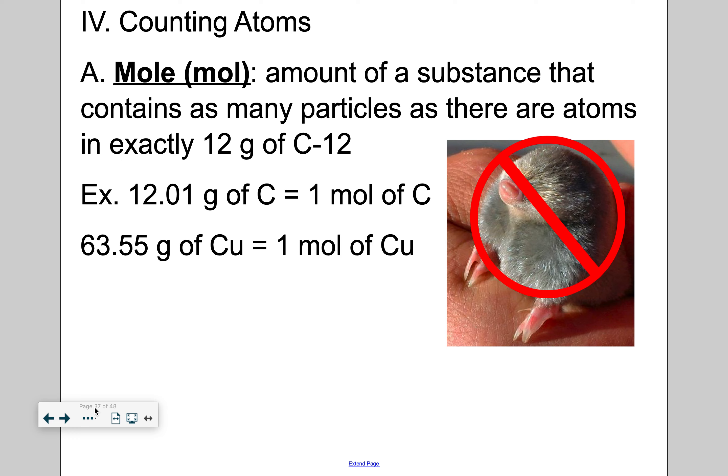So one unit that we use to count atoms is a mole. Not the furry little creature. I'm talking about the mole where it's M-O, the unit is M-O-L. So what is a mole? It's the amount of a substance that contains as many particles as there are atoms in exactly 12 grams of carbon-12. So if I'm looking at the carbon isotope, carbon-12 as the isotope, six protons, six neutrons, I weigh out 12 grams, that amount is equivalent to a mole. That's kind of our standard.